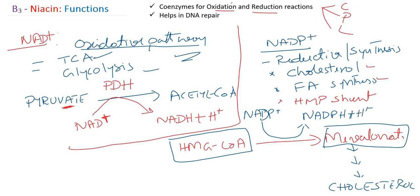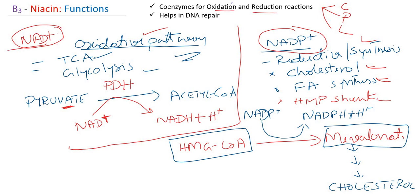This illustrates the difference between the two active forms of niacin — NAD+ and NADP+. NAD+ is for the oxidative catabolic pathway; NADP+ is for the reductive synthesis pathway, such as cholesterol synthesis, fatty acid synthesis, and the HMP shunt pathway — a carbohydrate metabolism pathway where ribose is synthesized for use in DNA.